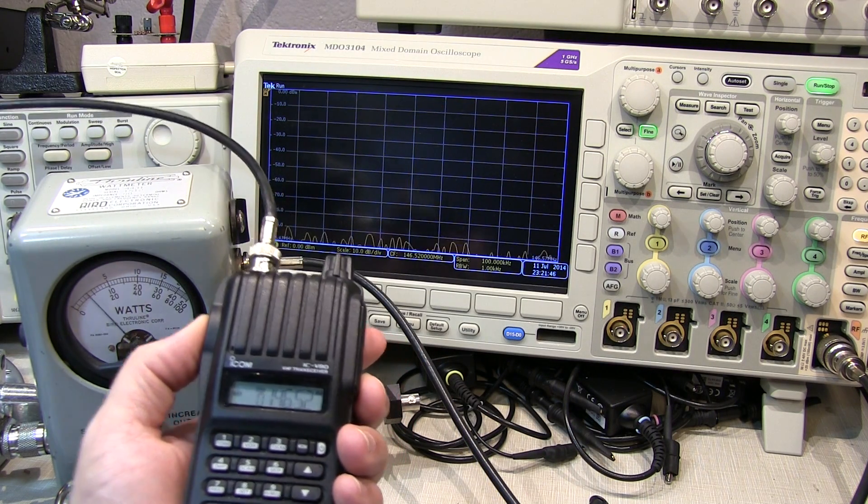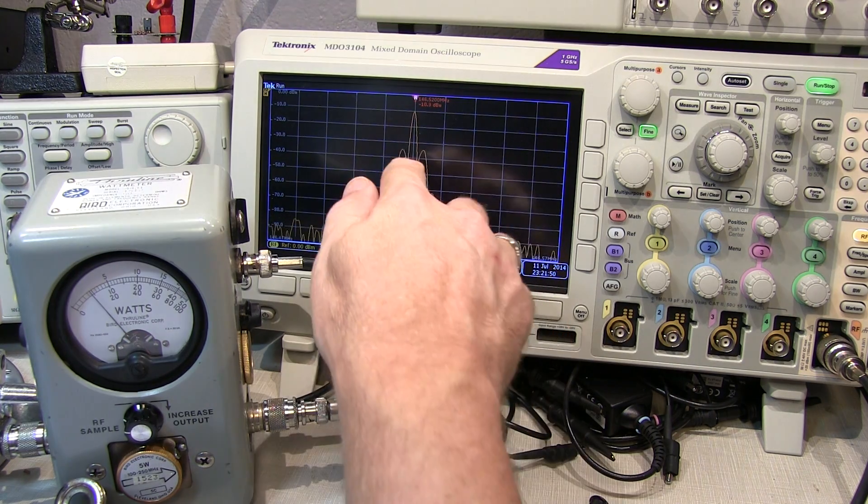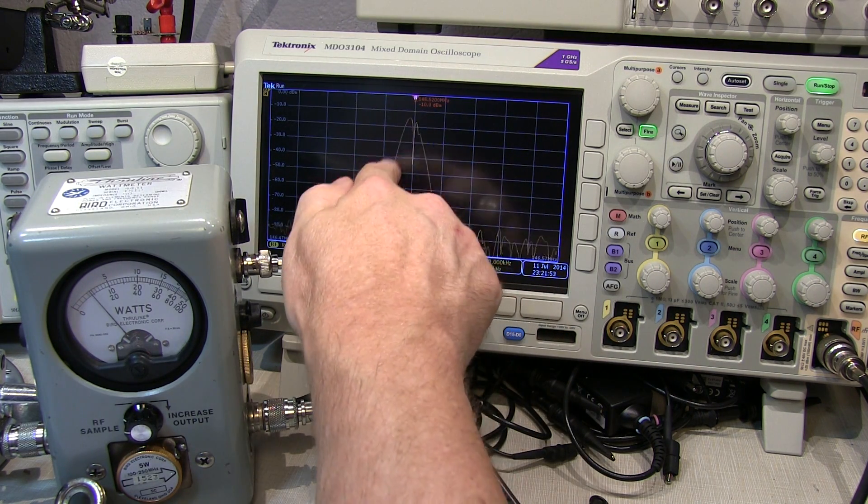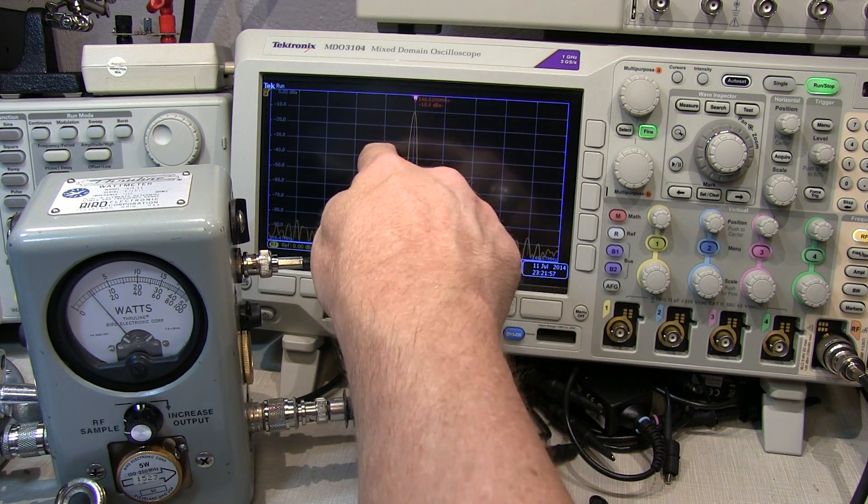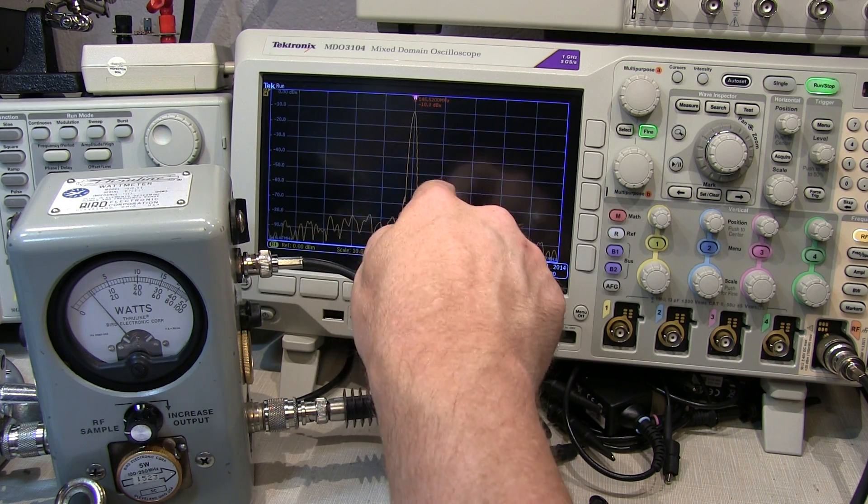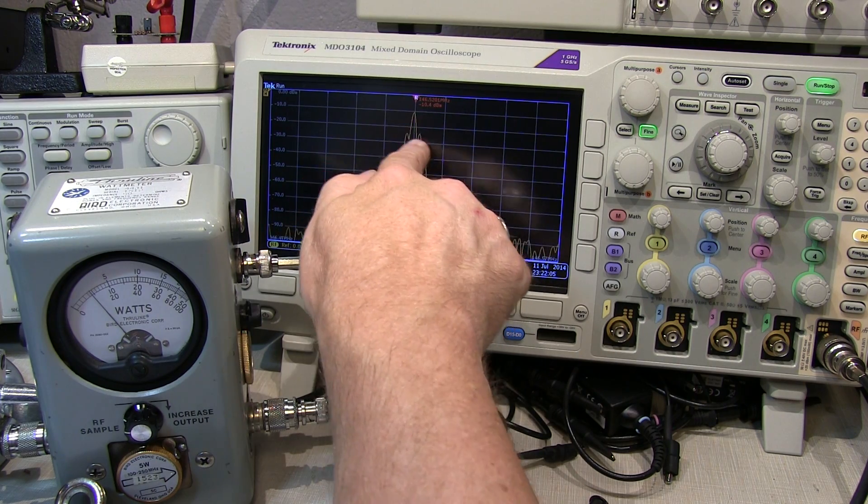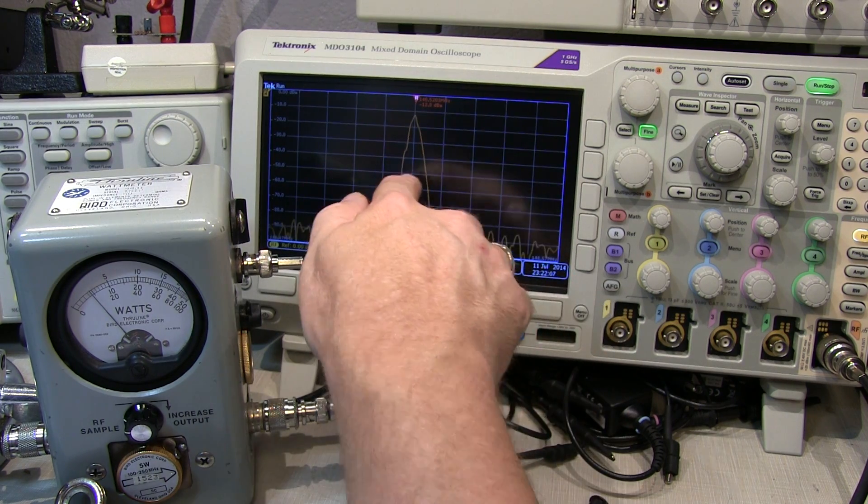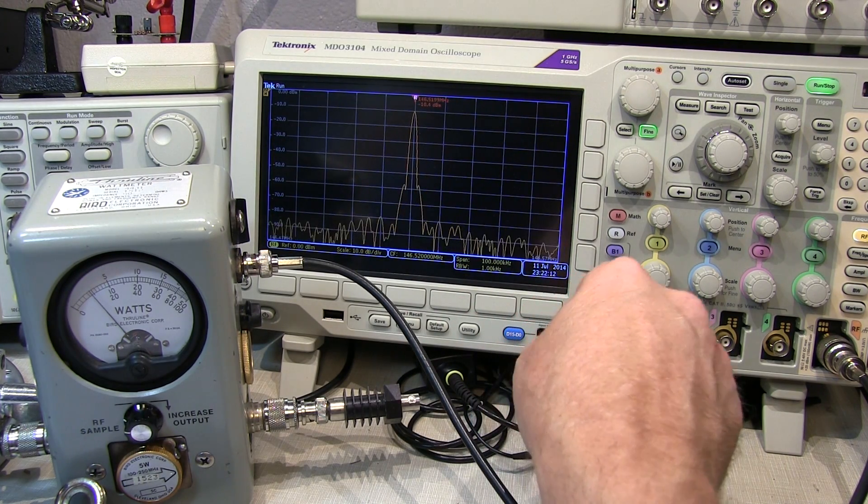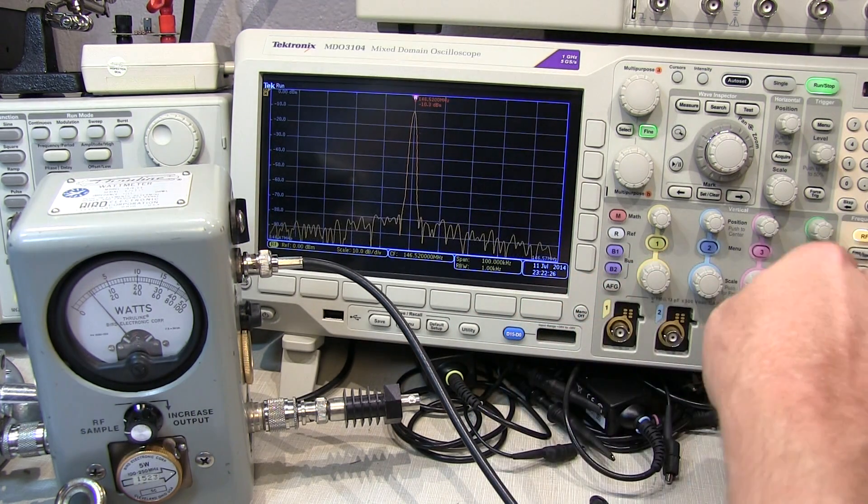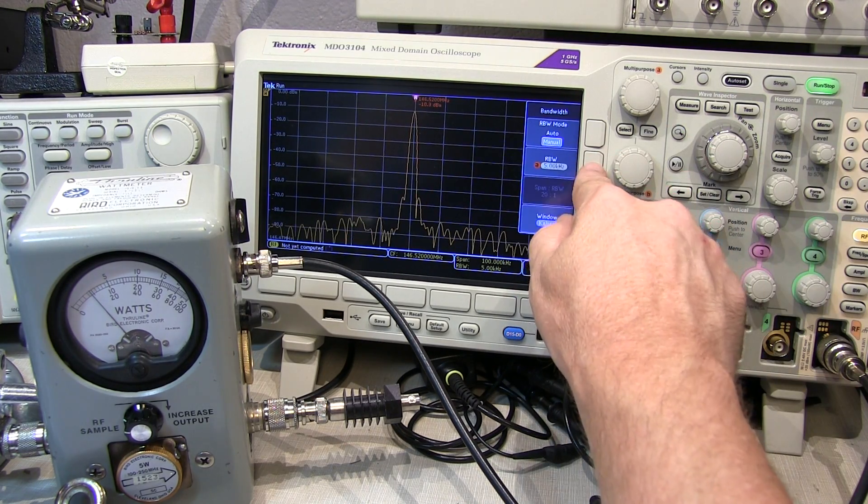The next step is to set the resolution bandwidth on the spectrum analyzer to encompass much of the sidebands of the modulation. Go with about 20 or 25 dB down on either side of center, and we can see we're probably occupying about five kilohertz on either side of the carrier. That's a rough estimate, so you want to set the resolution bandwidth to at least five kilohertz. We'll reach over and set the resolution bandwidth to five kilohertz.